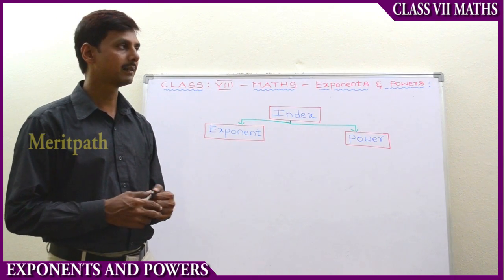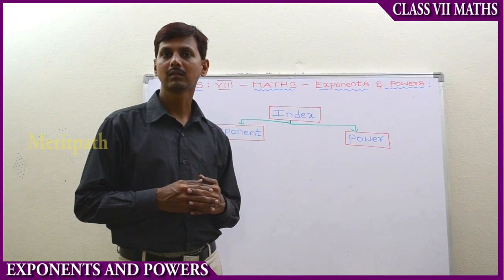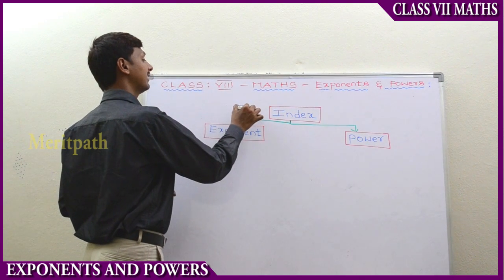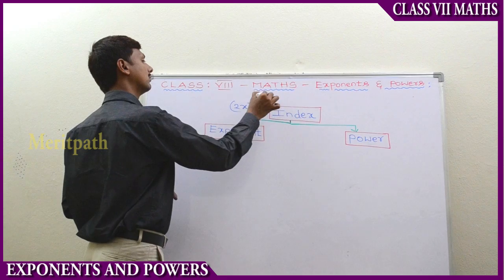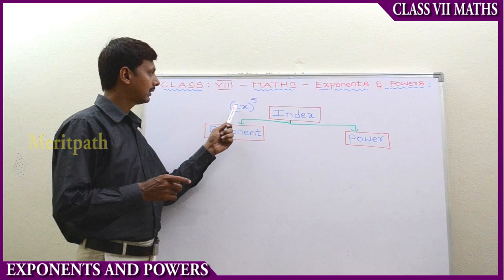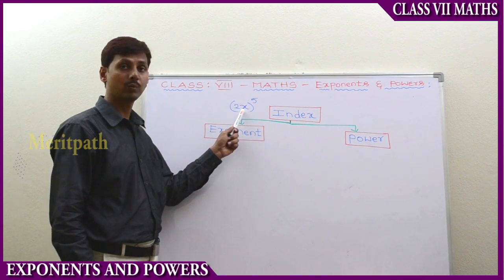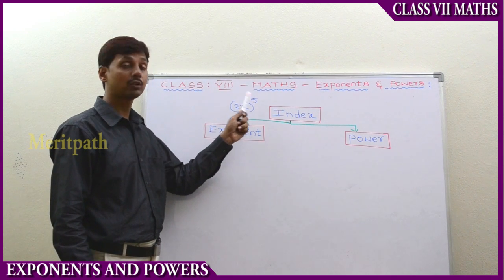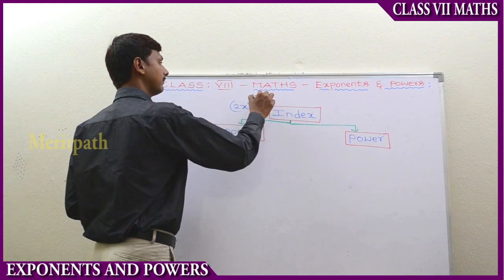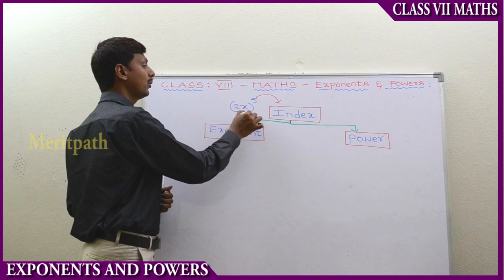Let's discuss about powers and exponents. If we take 2x to the power of 5, we call it as index because it has a base of both a numerical value and a variable. So 5 is called as index and 2x is the base.